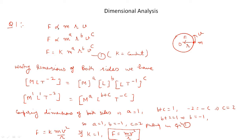F is directly proportional to M, R, and V. We can write that F is directly proportional to M to the power A — meaning M is involved A times in this formula, R is involved B times, and velocity is involved C times. So we write F = K · M^A · R^B · V^C. Let K be a constant equal to 1.